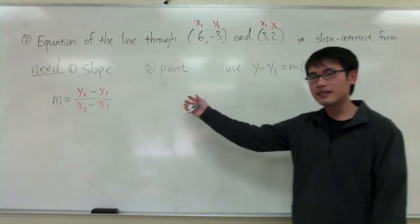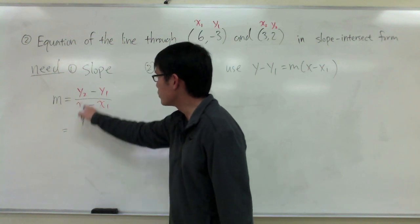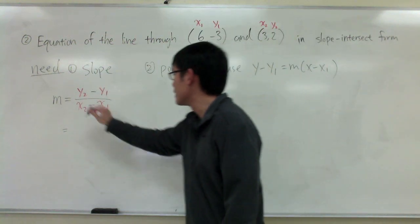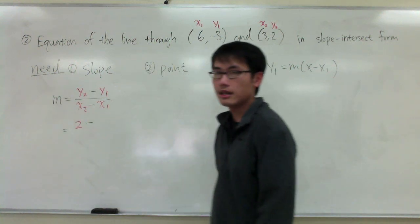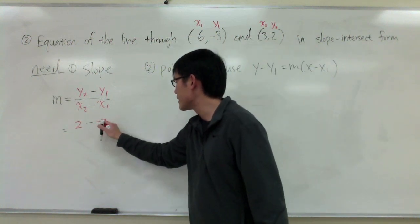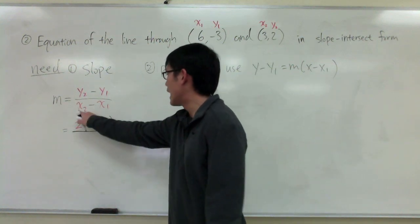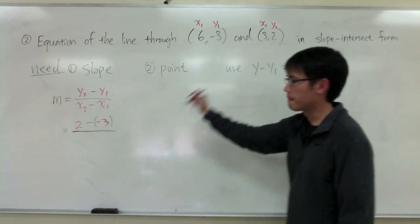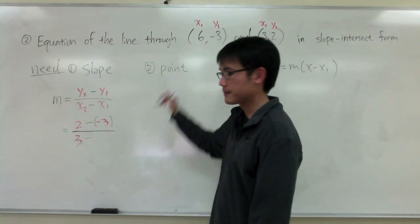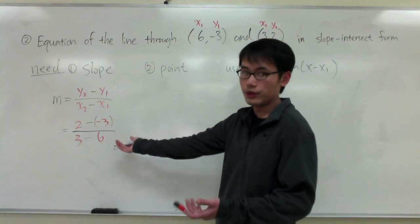So now I can just plug it into the formula to find the slope. So m is equal to y2. And my y2 is the number 2. So I have 2 minus my y1 is equal to negative 3. So I have 2 minus negative 3. Over, I have x2, which is 3. I have 3 minus my x1 is 6.